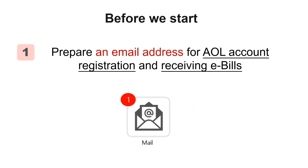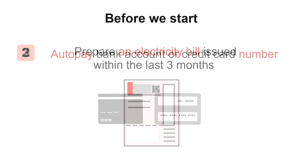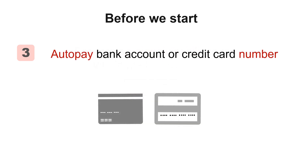Before we start, firstly, prepare an email address for AOL account registration and receiving e-bills. Secondly, prepare an electricity bill issued within the last three months. Thirdly, if you are currently settling your bills through autopay, please prepare your Autopay bank account or credit card number.